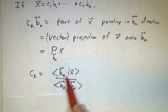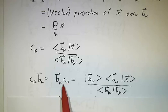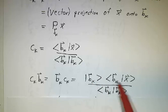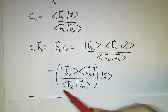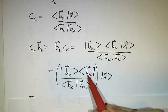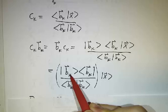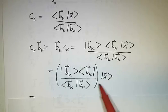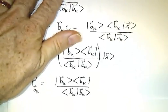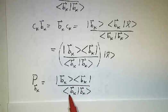ck is given by the inner product of bk with x divided by the inner product of bk with itself. So writing ck times bk, we can rearrange this as bk times ck — putting the scalar on either side — and write it as the ket |bk⟩ multiplied by the bra ⟨bk| acting on x, divided by ⟨bk|bk⟩. This means: take x, compute its inner product with bk via the bra, multiply by the ket bk, and divide by the inner product of bk with itself. That gives a projection operator: an outer product (ket times bra) divided by the inner product (bra times ket).